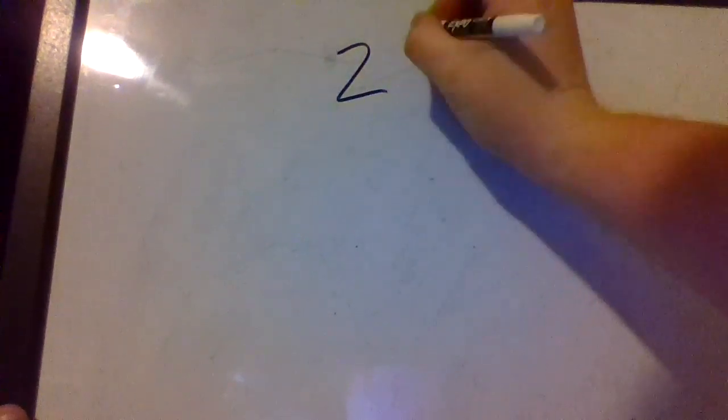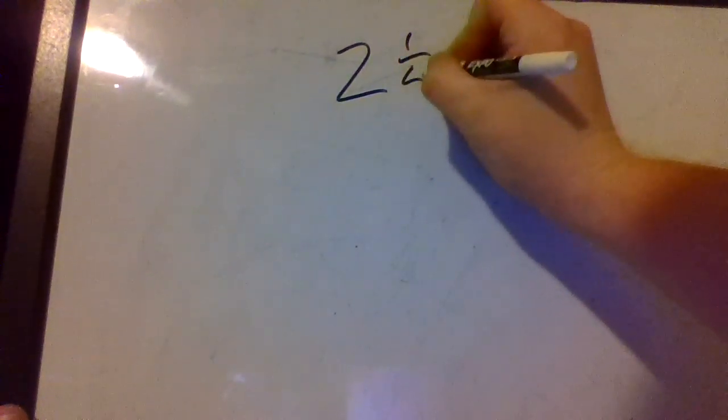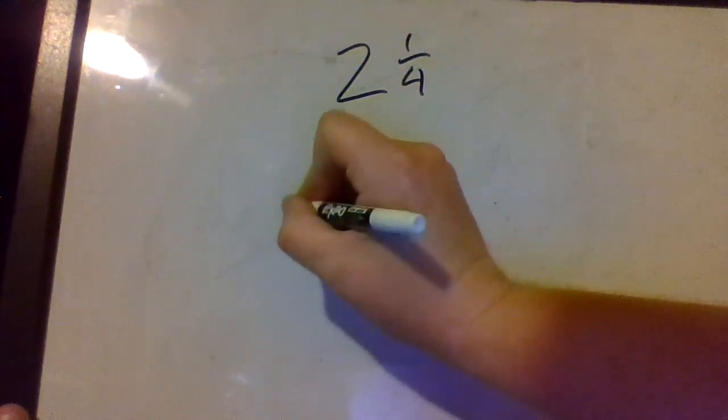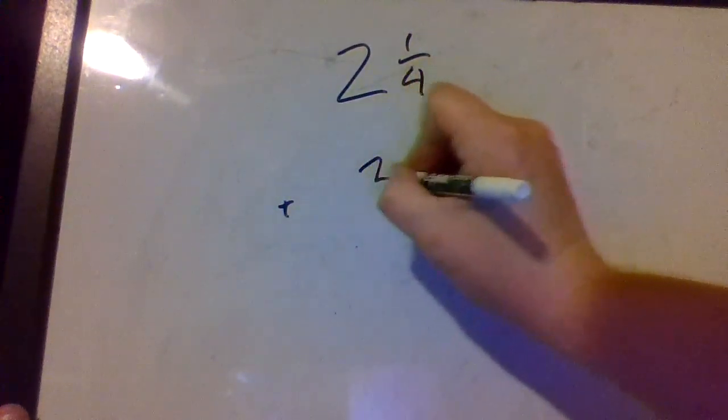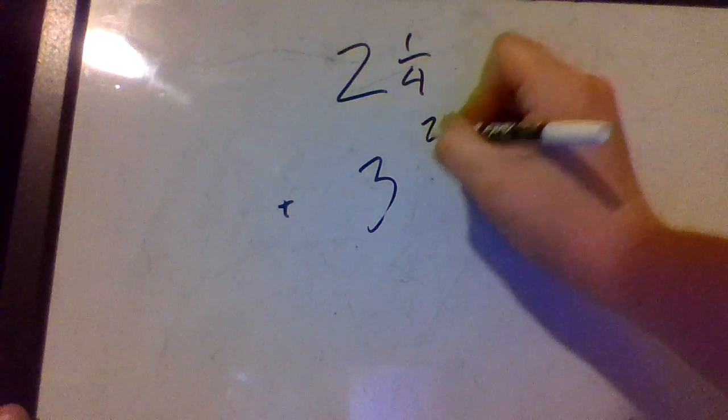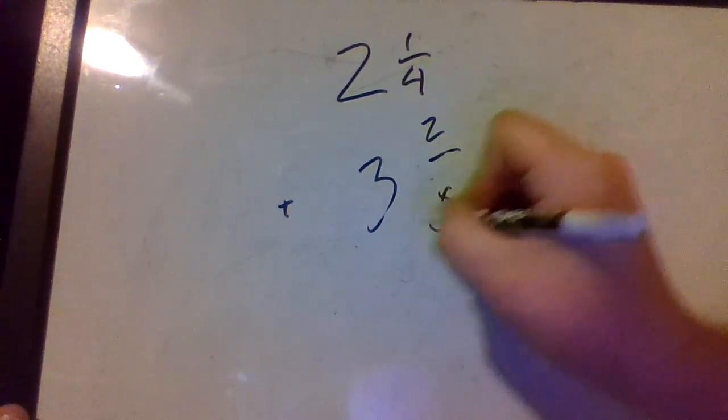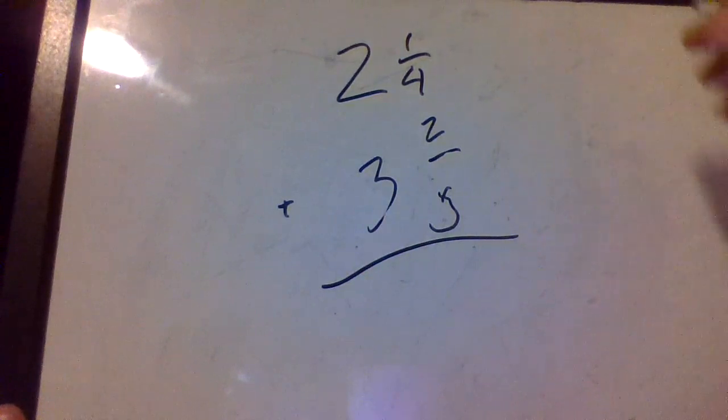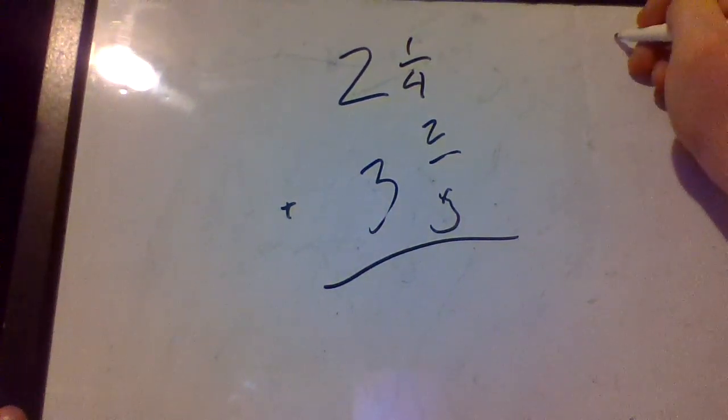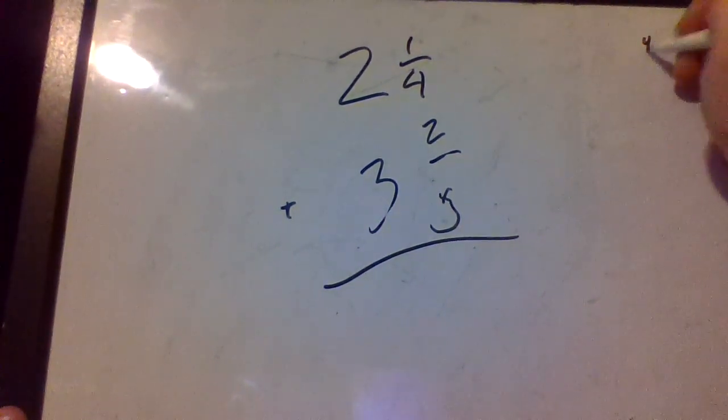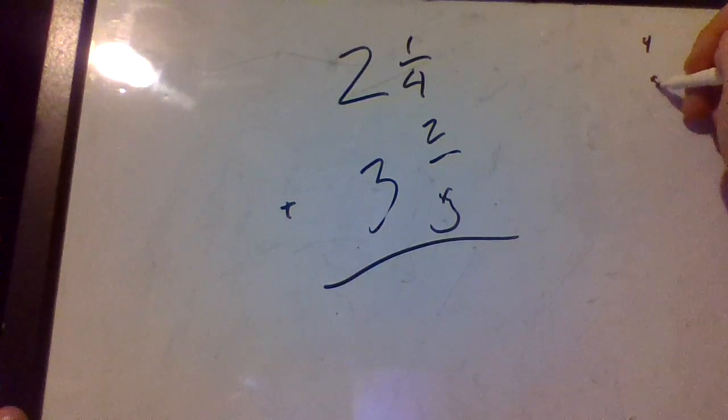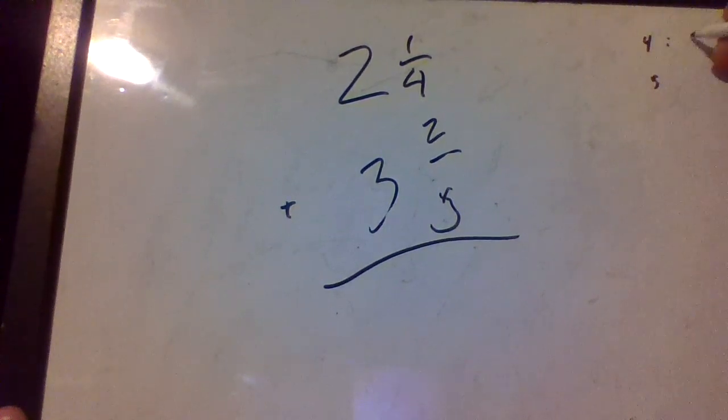Two and one fourth plus three and two fifths. Okay, so we're gonna find a common denominator between four and five. Four times one is four, four times two is eight, four times three is twelve, four times four is sixteen, four times five is twenty.